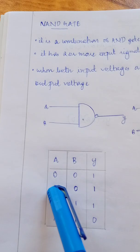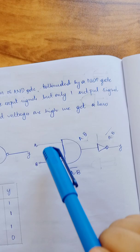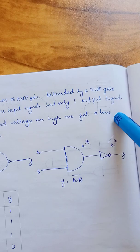When A is 1 and B is 0, A dot B is 0. A dot B whole bar means the output voltage will be 1.